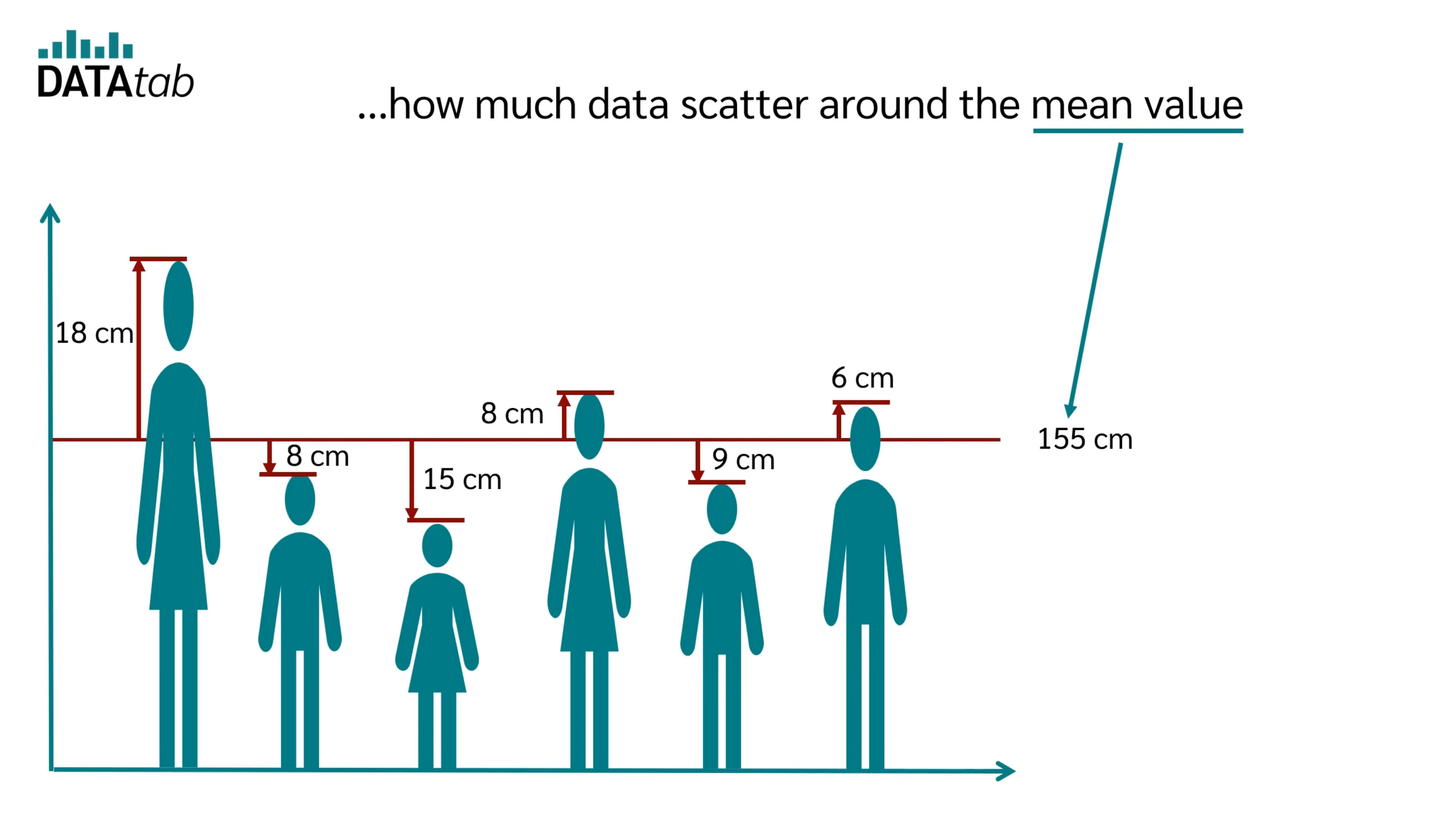Now, of course, you are not interested in the deviation of each individual person from the mean value, but you want to know how much the persons deviate from the mean value on average. So how much do these persons on average deviate from the mean value? This is what the standard deviation tells us. In our example, the average deviation from the mean value is 12.06 cm.